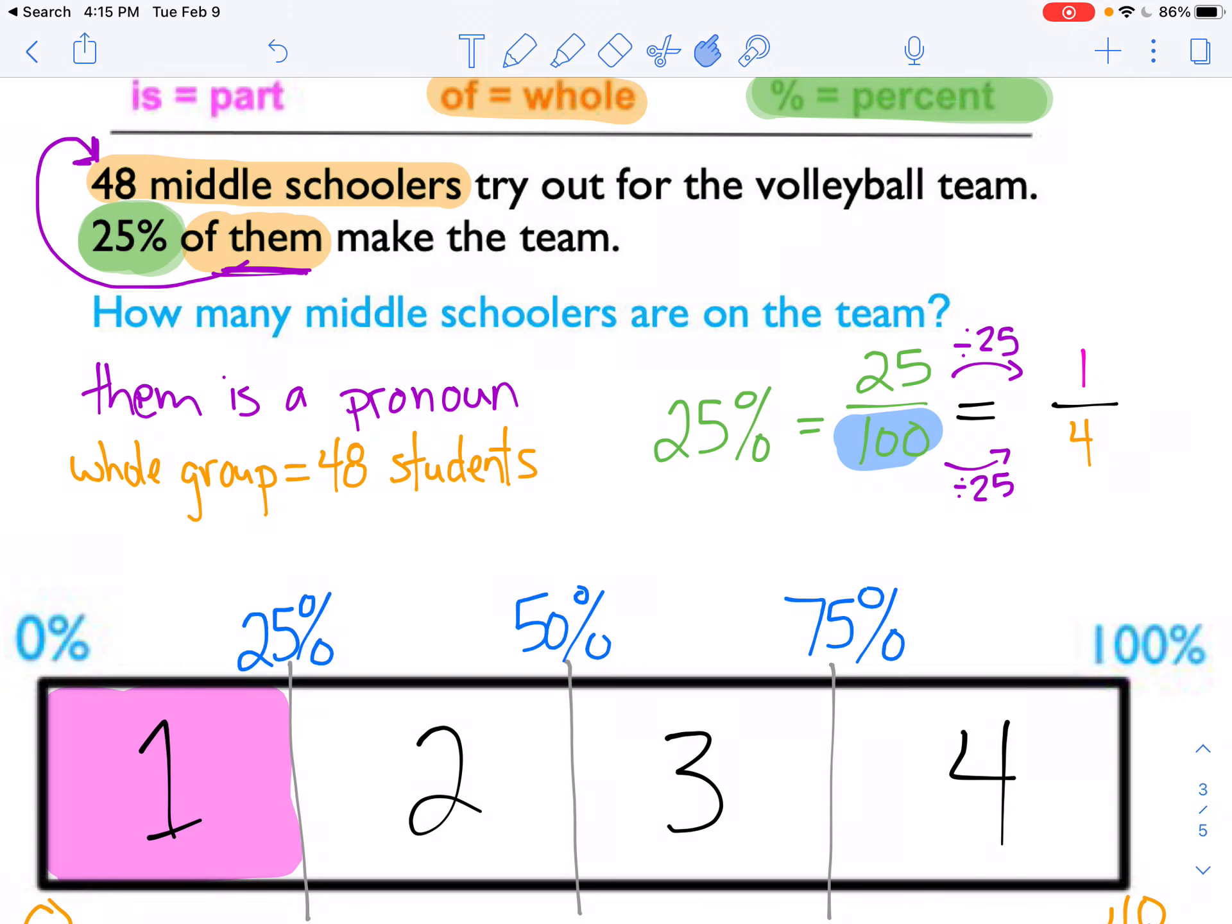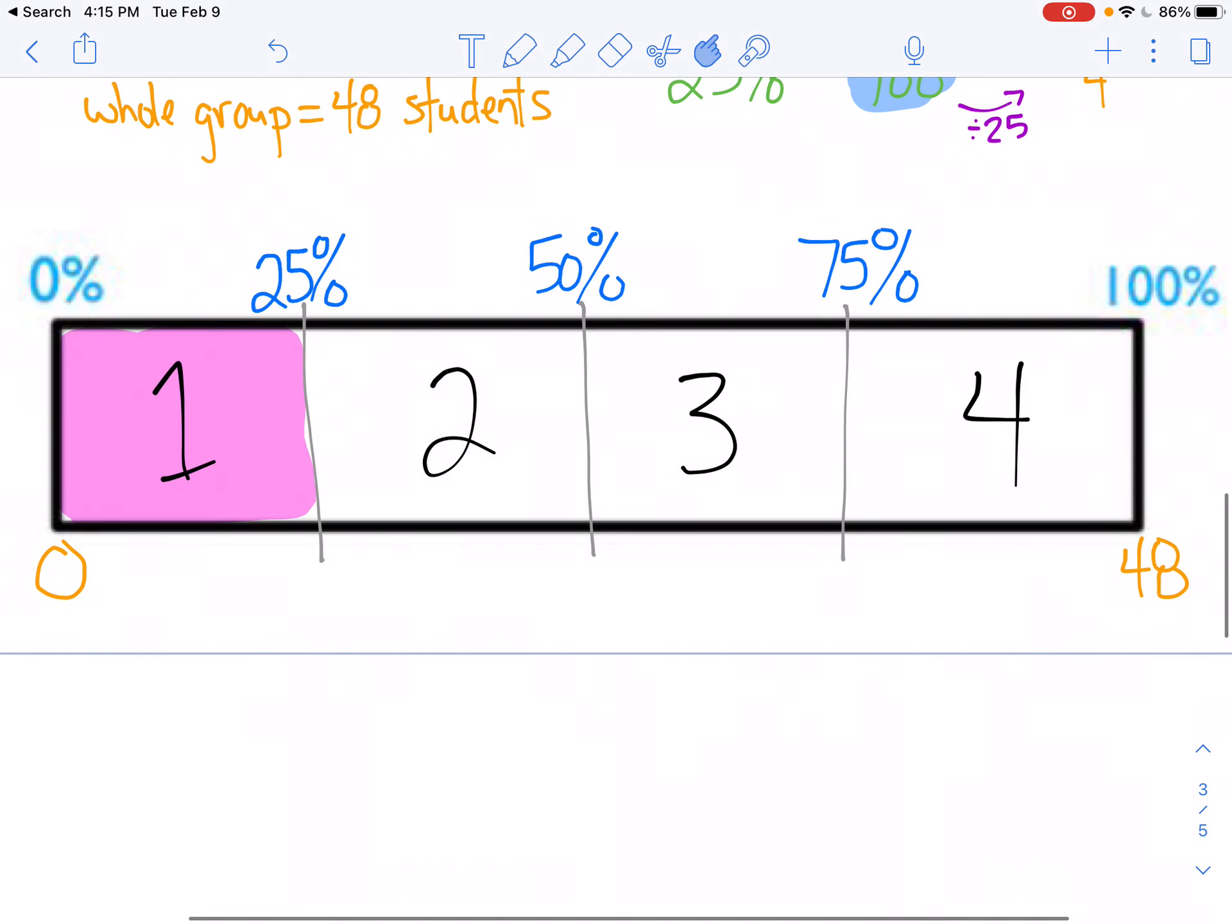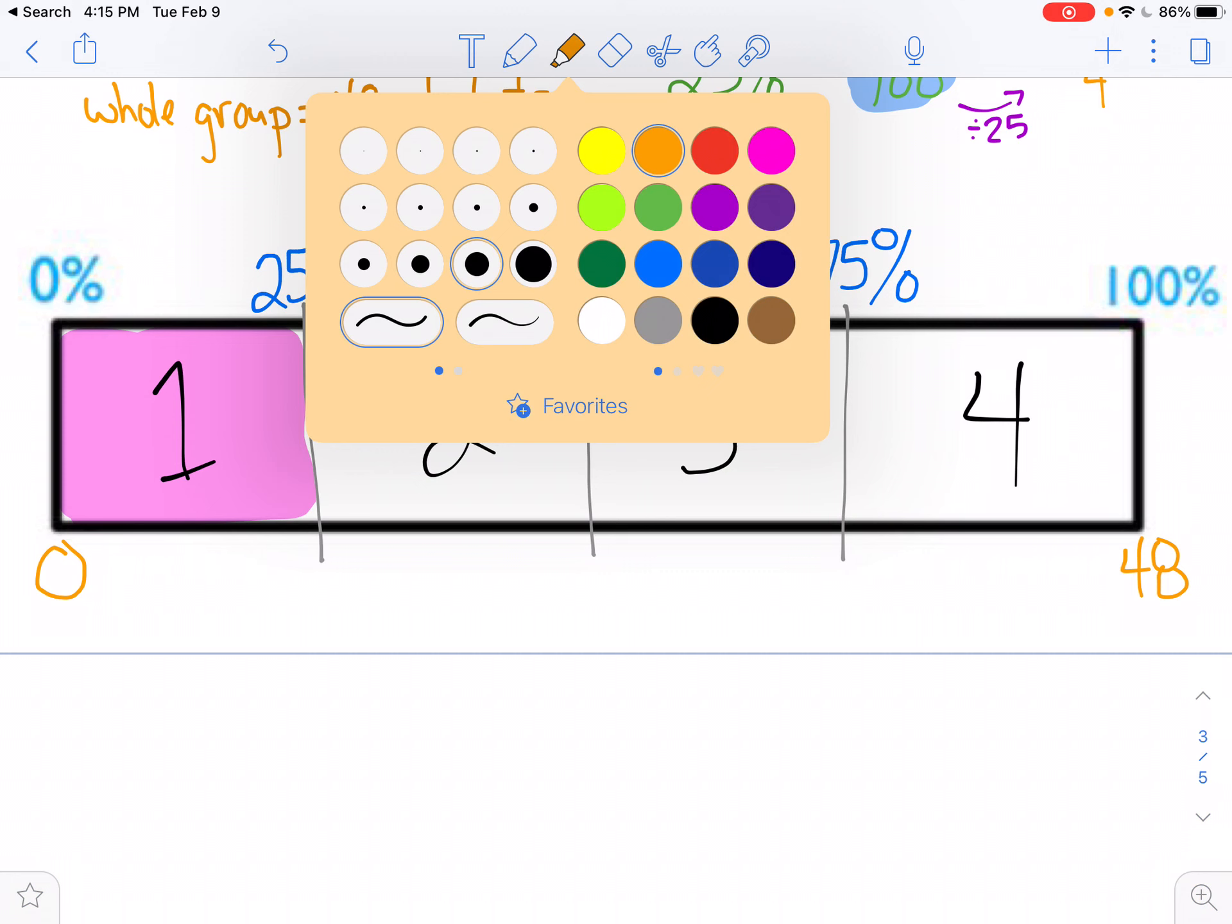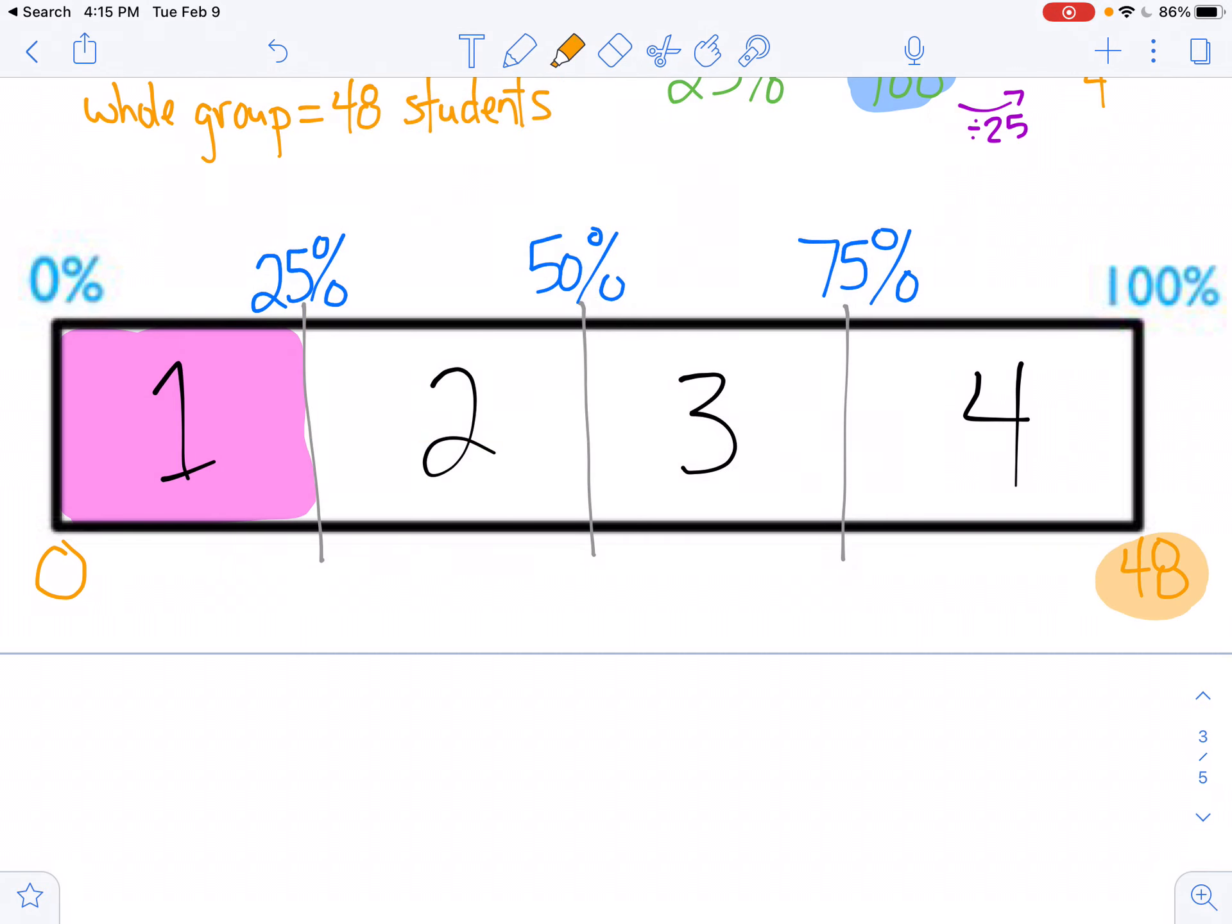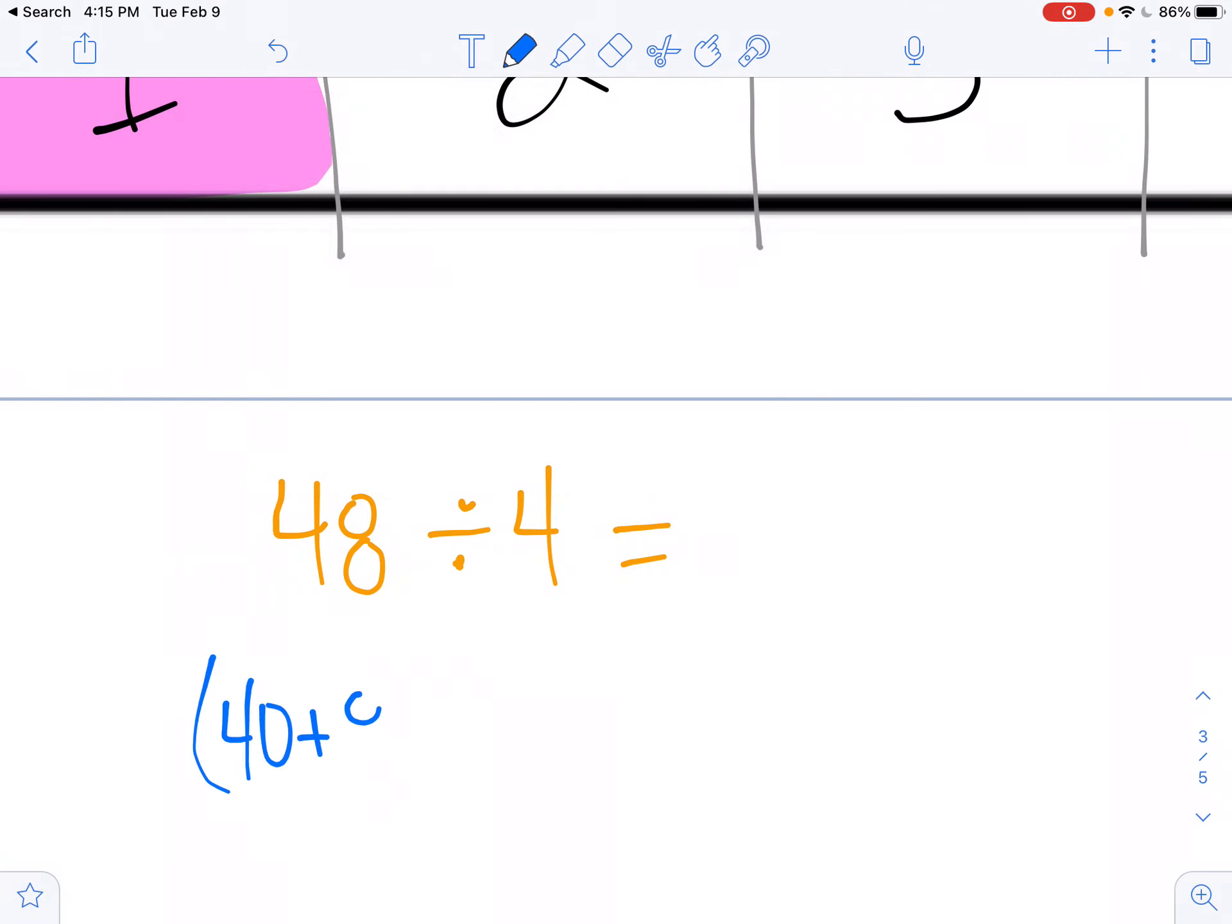But now I have to figure out the part of the group. So I actually want the number of students, not the percent. I want the number of students. So to do that, I can see that the whole group was 48. And the whole rectangle got cut into four equal groups. So this problem is now 48 split into four equal groups. I can also see this without a calculator as 48 is 40 plus 8. So I can divide both of those by 4. So 40 divided by 4 is 10. 8 divided by 4 is 2. So 10 plus 2 is 12.